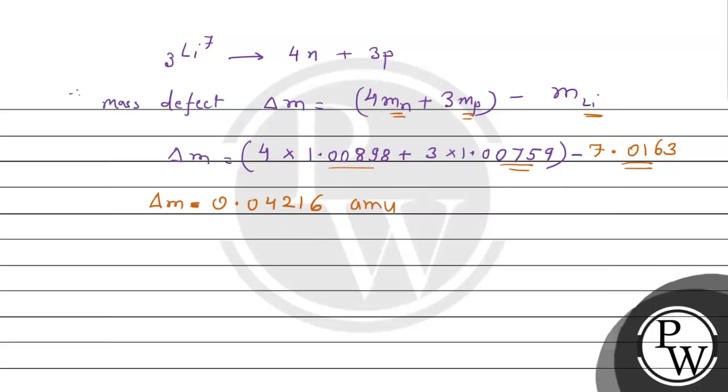When we multiply by 931 to find the binding energy, that is Δm multiplied by 931 MeV: 0.04216 times 931 equals 39.25 MeV.